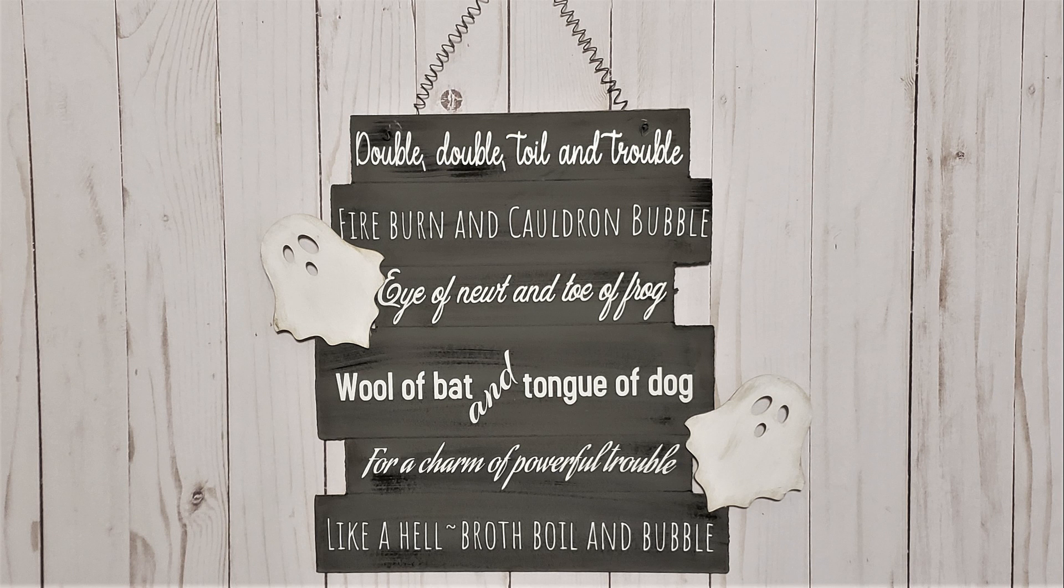Double, double, toil and trouble, fire burn and cauldron bubble, eye of newt and toe of frog, wool of bat and tongue of dog, for a charm of powerful trouble, like a hellbroth, boil and bubble.